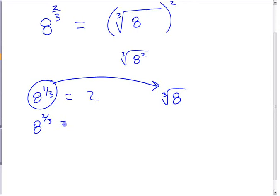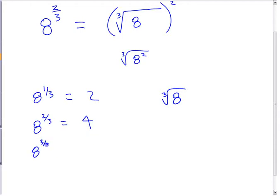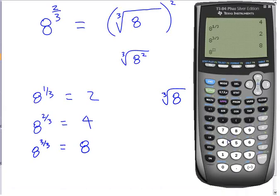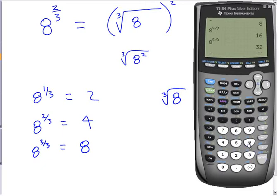8 to the 2 thirds was 4, and 8 to the 3 thirds was 8. Continuing the pattern, 8 to the 4 thirds was 16, 8 to the 5 thirds is 32, and 8 to the 6 thirds should be 64 — both because it follows the pattern of doubling, and because 6 thirds equals 2, and 8 squared is 64.